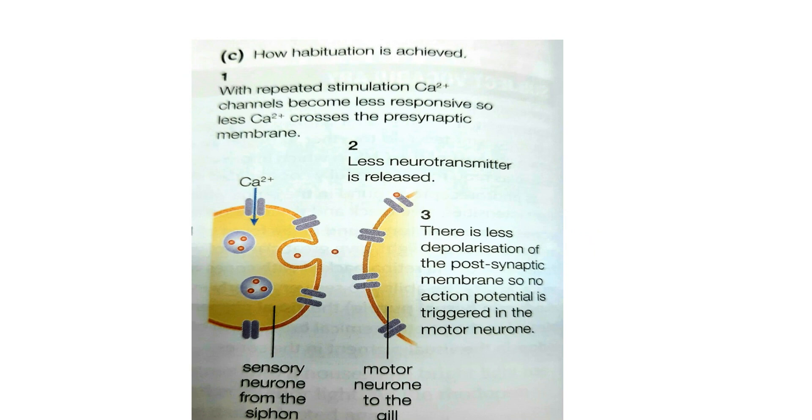When the action potential reaches the end of the synapse, the calcium voltage-gated channels become less responsive. So as they become less responsive, less calcium will enter into the synaptic cleft. This means less vesicles are made by the Golgi apparatus and less neurotransmitters are released by exocytosis in the synaptic cleft.